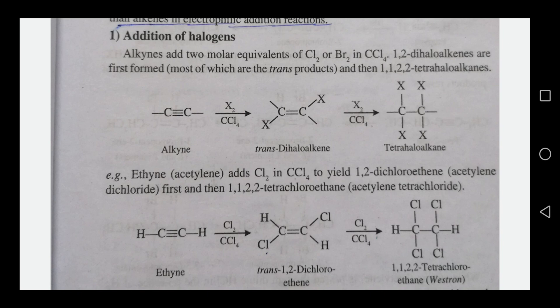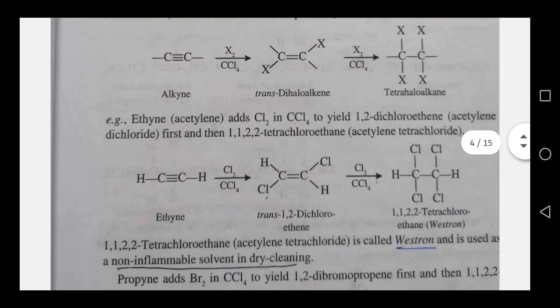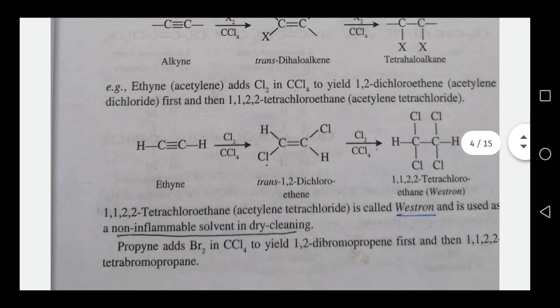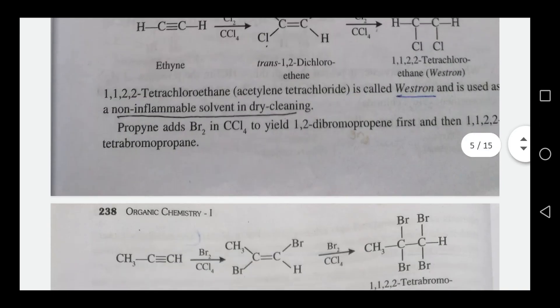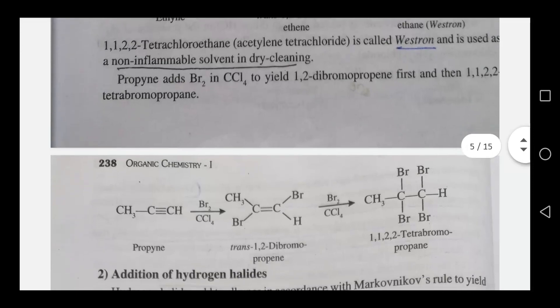The tetrahalide is the final product when excess halogen is used. Westron is a non-inflammable solvent used in this reaction. In the case of bromine in CCl4, trans-1,2-dibromopropene is the first product, and tetrabromopropane is the final product.